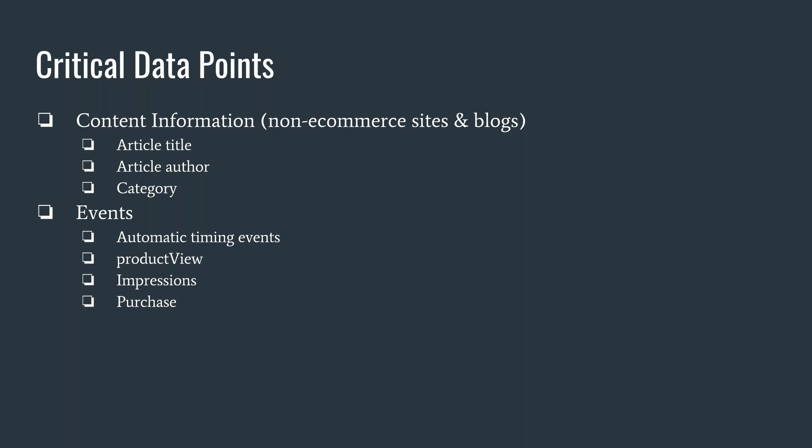Finally, the different events. Some things to think about: automatic timing events on a page, video view events, product view events, impressions versus viewing ads or banners on your website, as well as obviously purchase events. Going back to the strategy behind what to include in the architecture — those events, those user actions you're wanting to track, and then what are the data points that need to be collected to add context to those events and user actions.